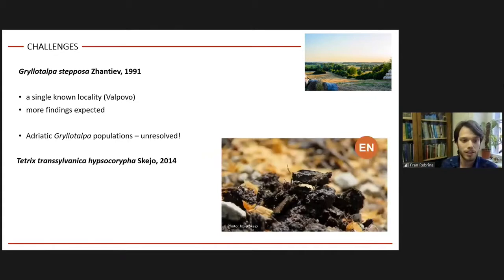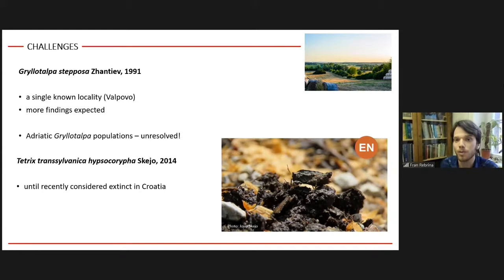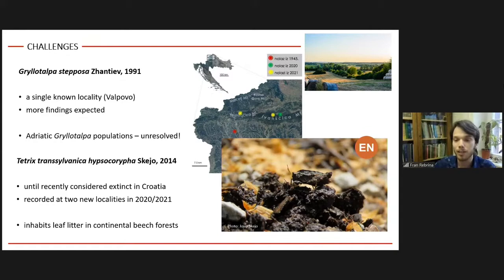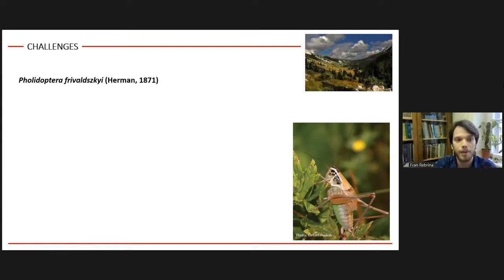Another curious case is Tetrix transylvanica hypsochroa, described as a subspecies in 2014 and until recently considered extinct in Croatia, as it was known only from two specimens in the Natural History Museum in Zagreb and had not been confirmed at the type locality. However, in 2020–2021 it was recorded at two new localities — Ivanšćica and Ravna Gora mountains in the Hrvatsko Zagorje region — found in moist leaf litter in continental beech forest, a habitat not frequently explored by orthopterists, so it is expected to be more widespread and was simply overlooked.